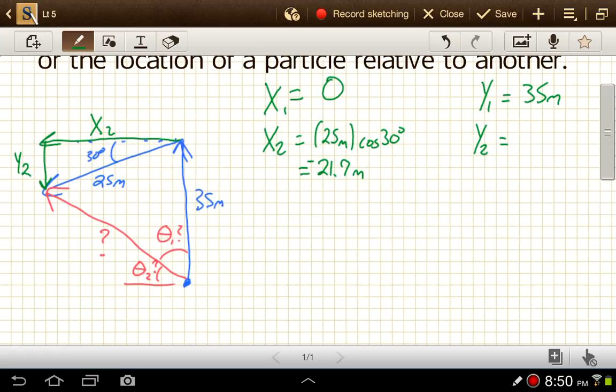So I'm going to do the hypotenuse, 25 meters, times the sine of 30 degrees. Sine of 30 degrees is just one-half, so this would be 12.5. But again, I see that it's pointing downward.